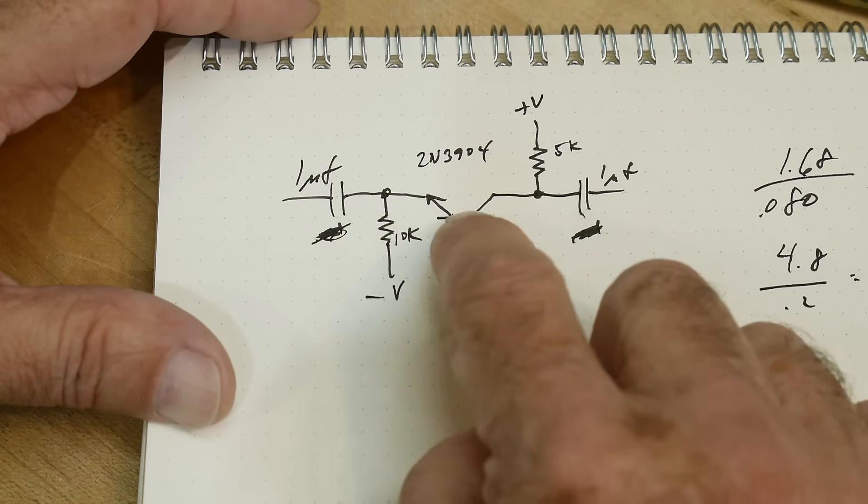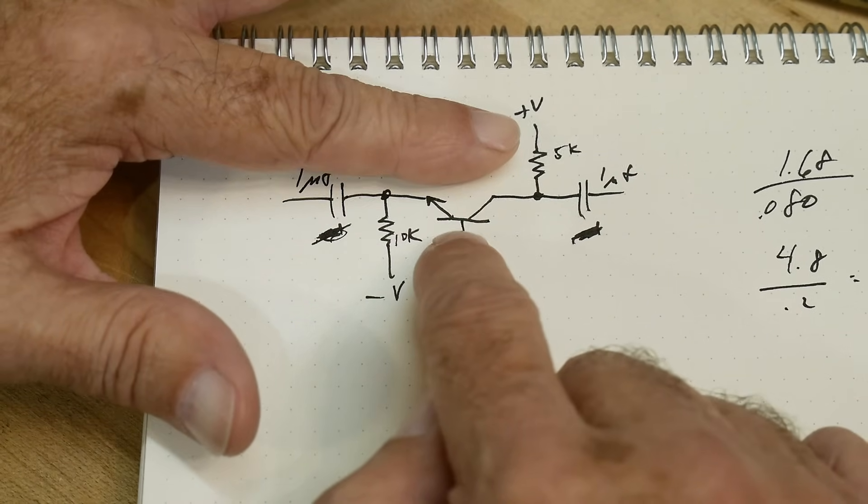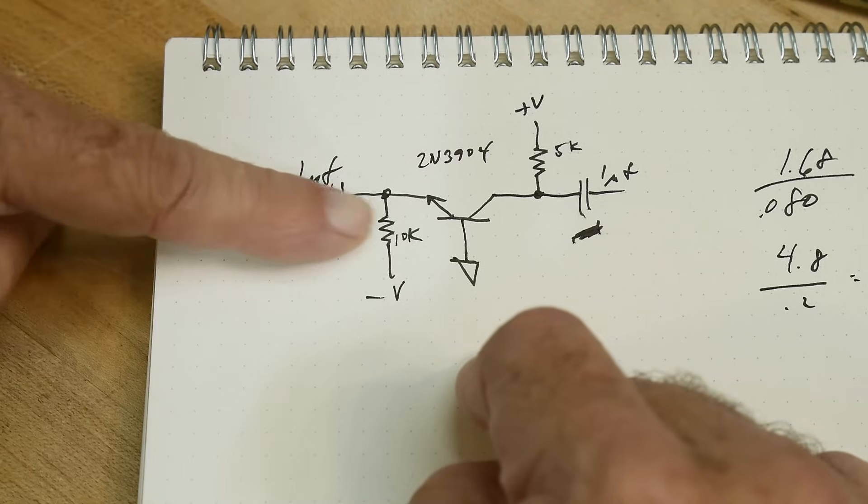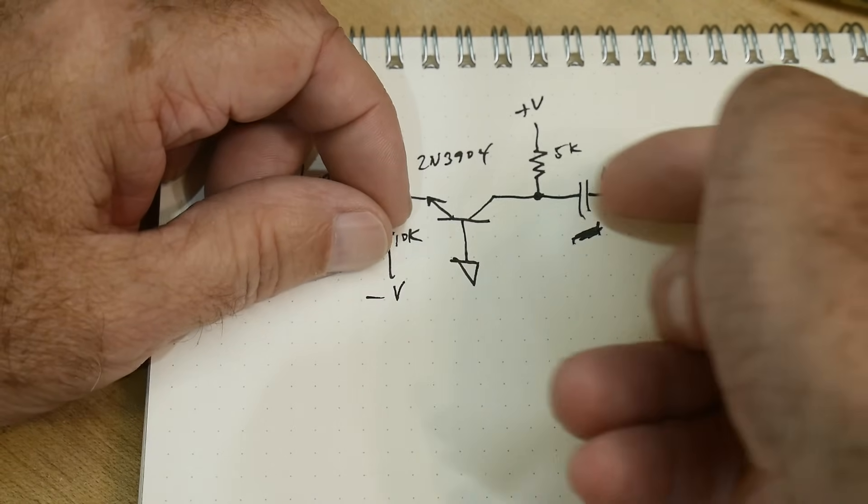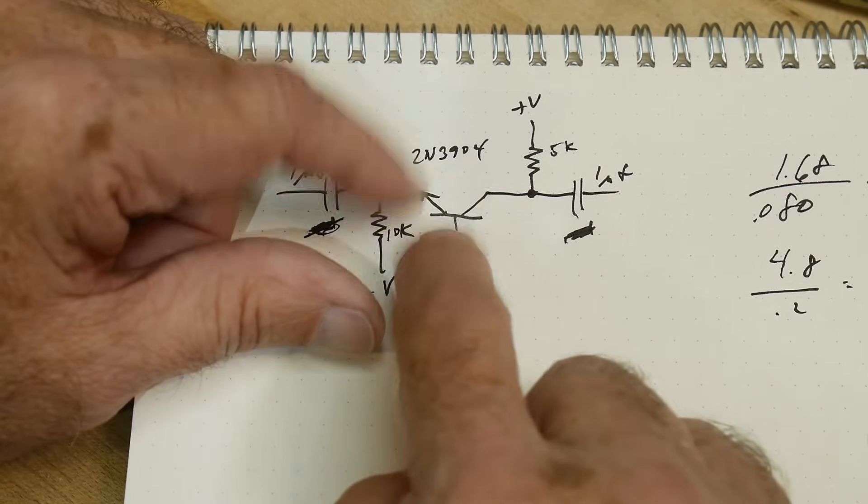It is a common base amplifier. Common base means the base is grounded, and if you look into the input this way, it refers to ground. If you look at the output, it refers to ground and refers to the base.